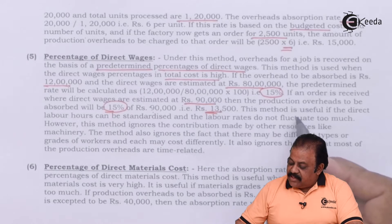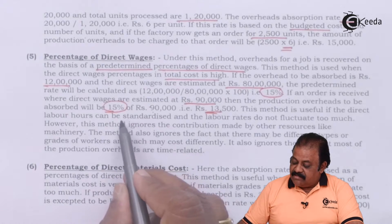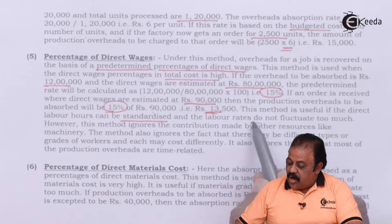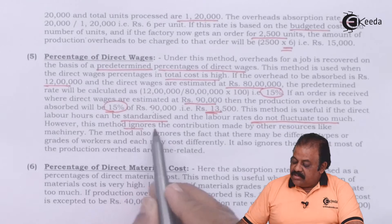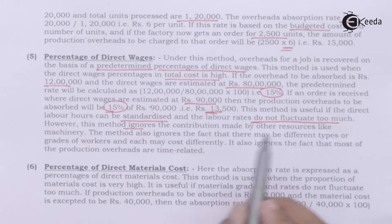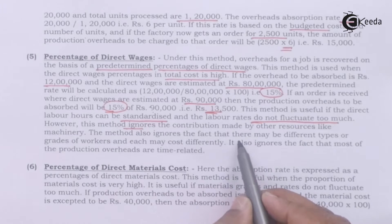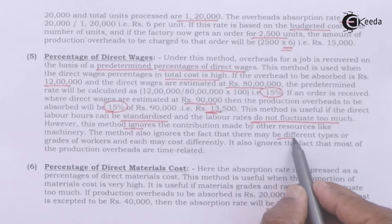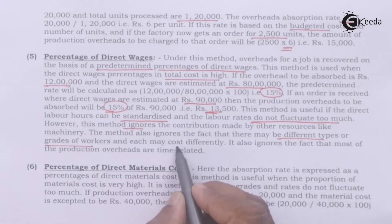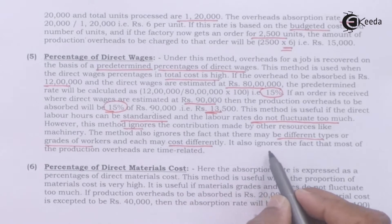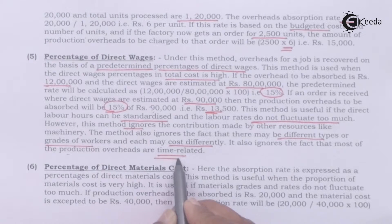This method is useful if direct labor hours can be standardized and labor rates do not fluctuate too much. However, it ignores the contribution made by other resources like machinery. It also ignores the fact that there may be different grades of workers, each costing differently, and that most production overheads are time-related.